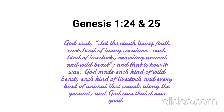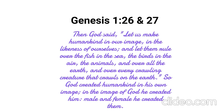Then God said, 'Let us make humankind in our image, in the likeness of ourselves, and let them rule over the fish in the sea, the birds in the air, the animals, and over all the earth, and over every crawling creature that crawls on the earth.' So God created humankind in His own image; in the image of God He created him; male and female He created them. The Hebrew word tselem is translated here as image but it actually means 'to shadow.' In this, we see that our purpose is to shadow God, which means we are to follow God and do the things that He does. As a shadow, we have some of the same attributes as God but we do not have all of His attributes — just as a shadow takes the form of something but lacks the details that are present in the object causing the shadow. No matter what anyone else may say about you, always remember that you were created in the image of God and He does not make junk.